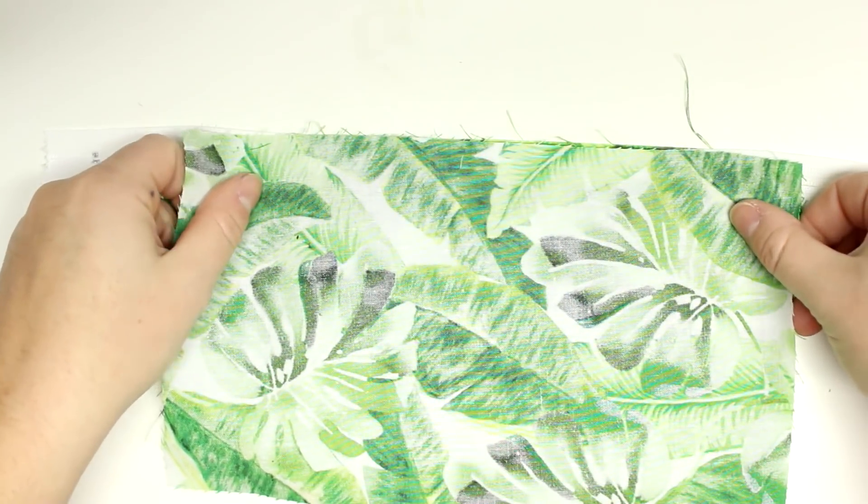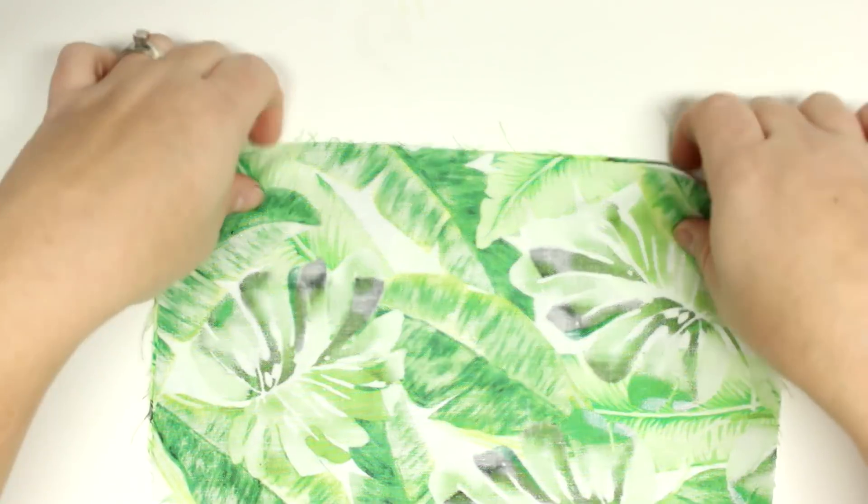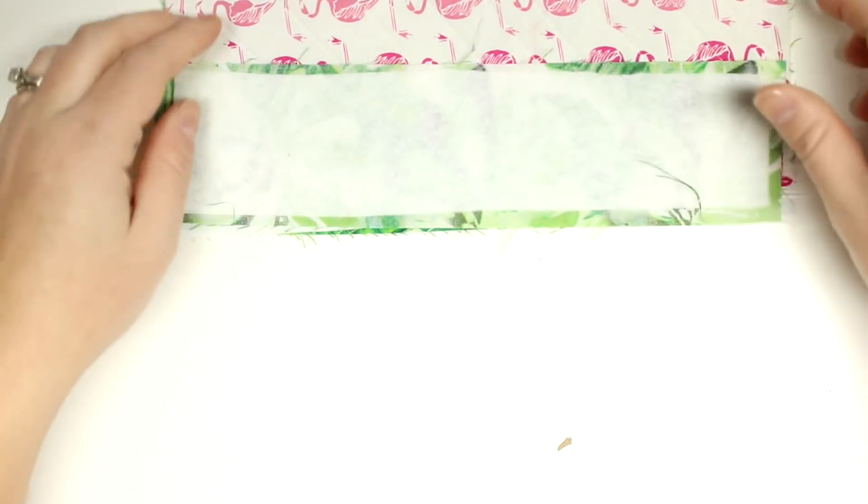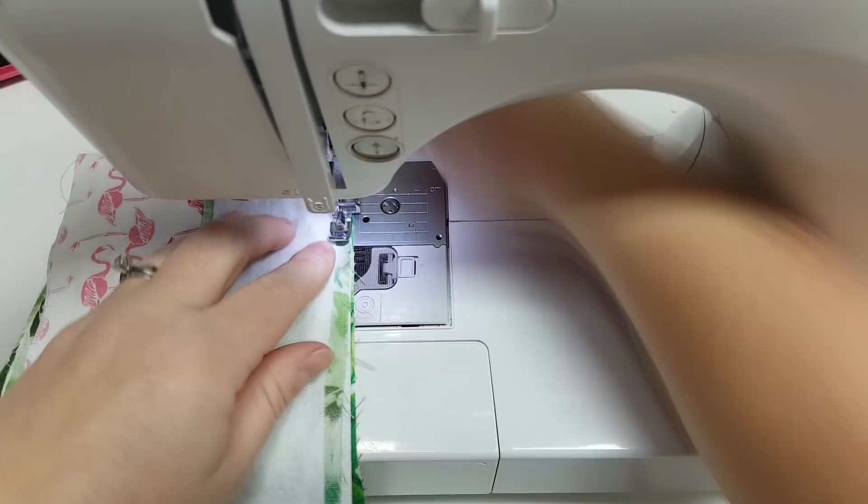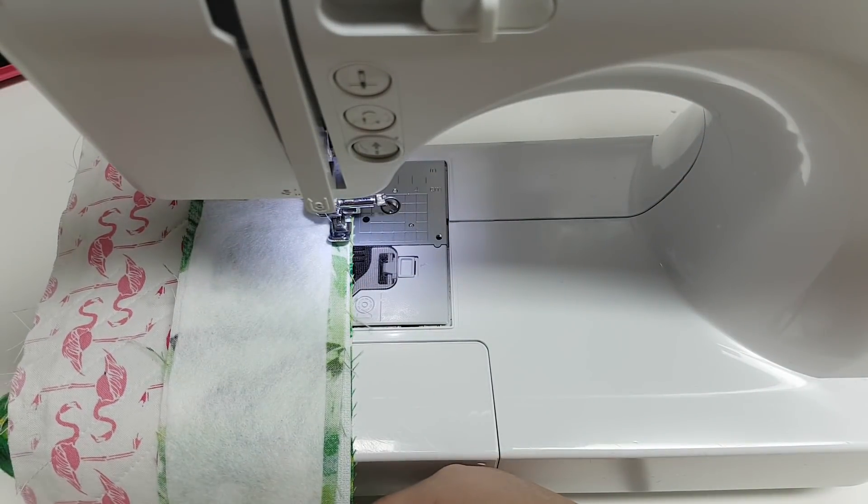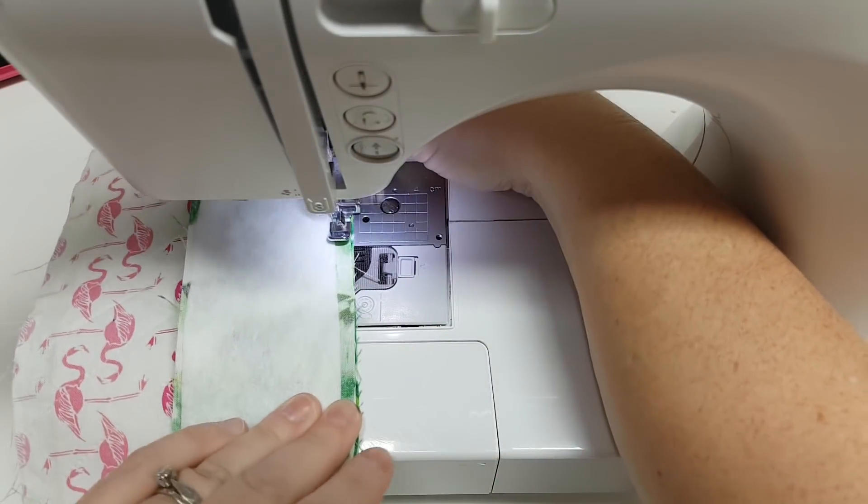Now you'll see why very shortly why the other lining piece is so large. But I'm just going to go ahead and install the second half of the zipper.